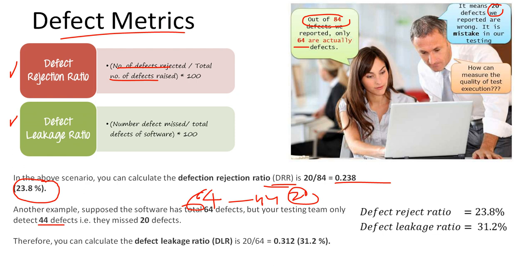How can we calculate defect leakage ratio, or DLR? Number of defects missed is 20, divided by total number of defects in software, which is 64. So 20 divided by 64 equals 0.312. If I convert this to percentage, it's 31.2 percent defect leakage ratio.